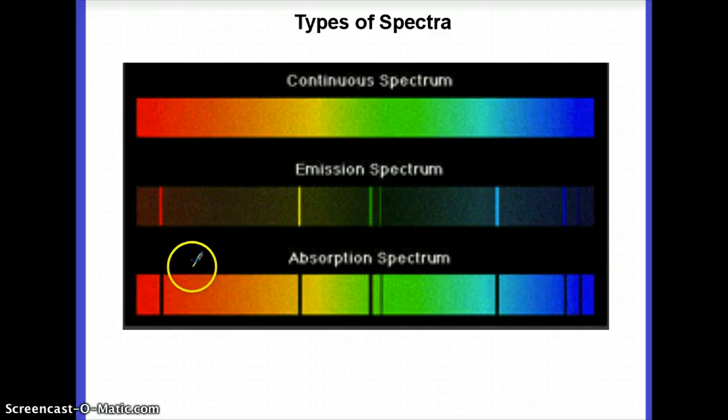We'll learn why it's called emission later. And then there's this third kind that looks kind of like a continuous spectrum, except that there are these black lines in it. So at these particular wavelengths, there is no light. And it is, by the way, no coincidence that these two lines match up. These two lines match up in the emission and absorption spectra. And again, we'll learn why that happens in a later lecture.